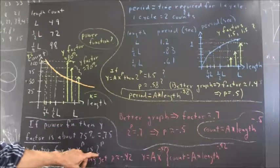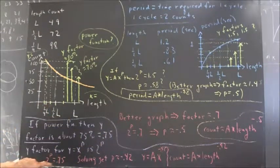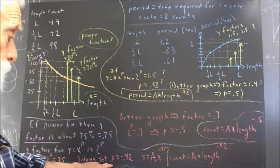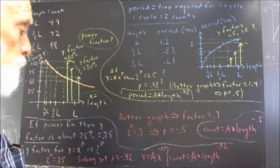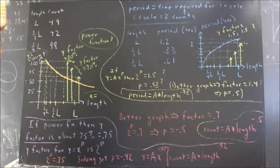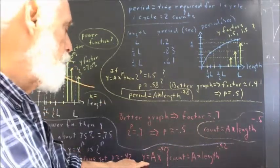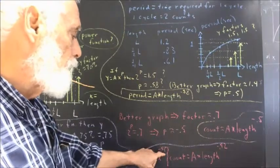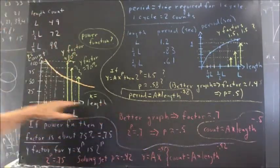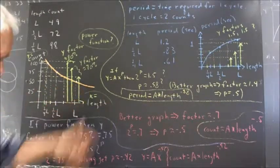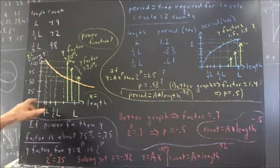So if 2 to the p is 0.75, because that's what our factor should be, the 2 to the p should be our factor, then we can solve that either by trial and error or logarithms. So we get p approximately equal to negative 0.42. This implies a relationship, y equals x to the negative 0.42. But of course, we haven't scaled this axis.